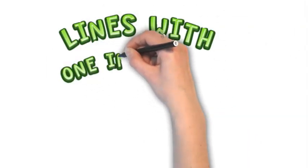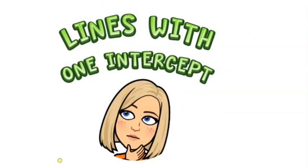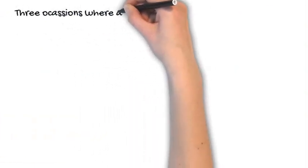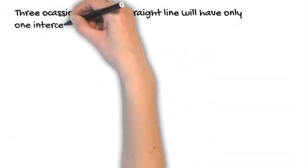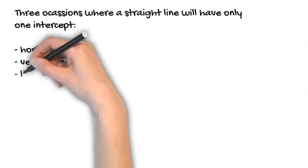Today we're looking at lines that have only one intercept. For a straight line graph or a linear relationship, there are three occasions where this will occur.